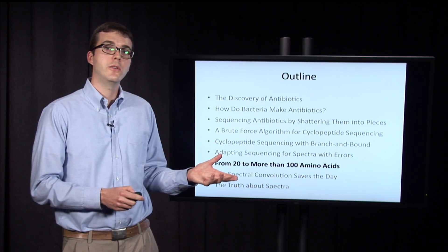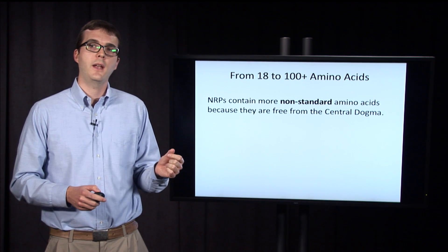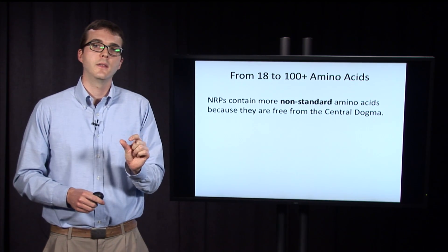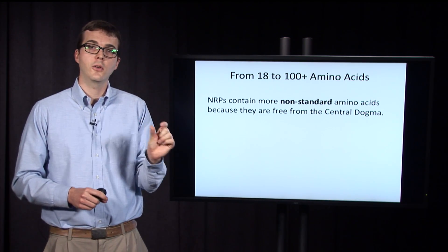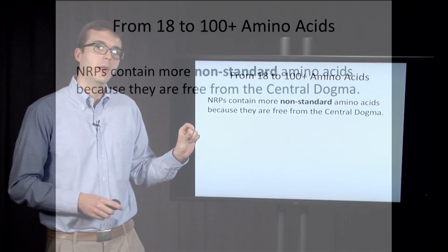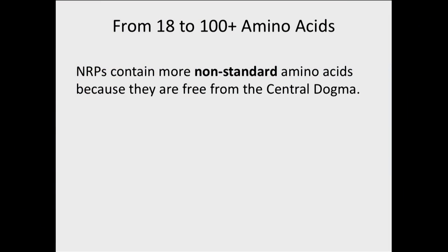I want to add some more bad news in this section, which is that these NRPs, these non-ribosomal peptides including tyrosidine B1, in practice will contain more non-standard amino acids that are outside of the standard genetic code, and this is because they're outside of the central dogma.